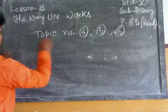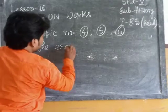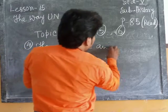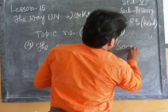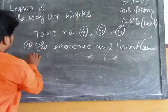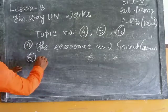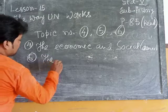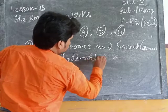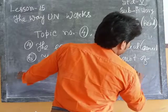The Economic and Social Council is topic number 4. Number 5 is the International Court of Justice.